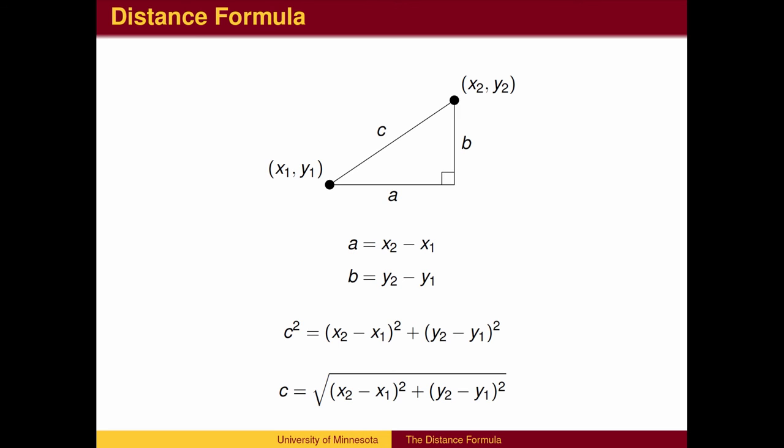In general, to find the length of the hypotenuse, the distance between two points, subtract x-coordinates to calculate a, subtract y-coordinates to calculate b. Use the Pythagorean Theorem to find c, taking a square root to simplify.